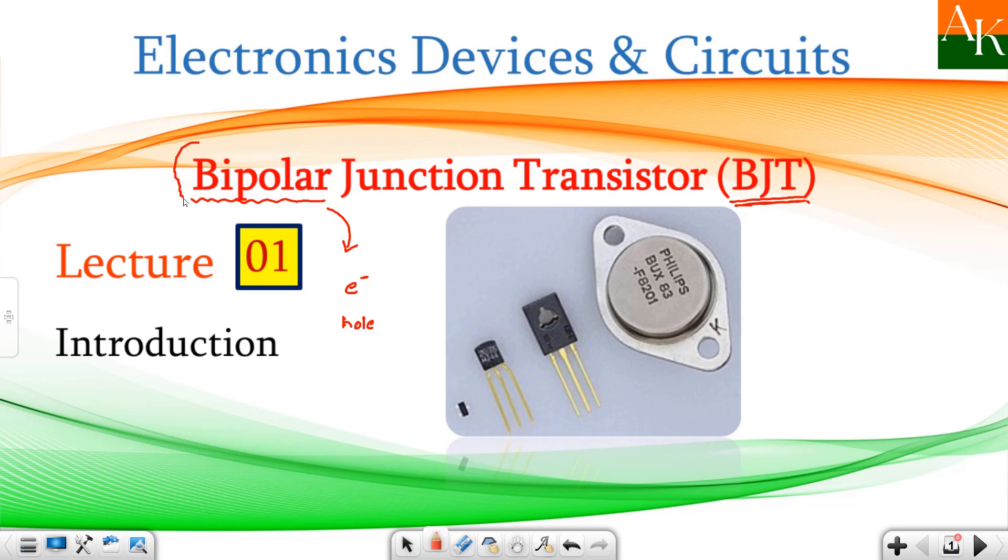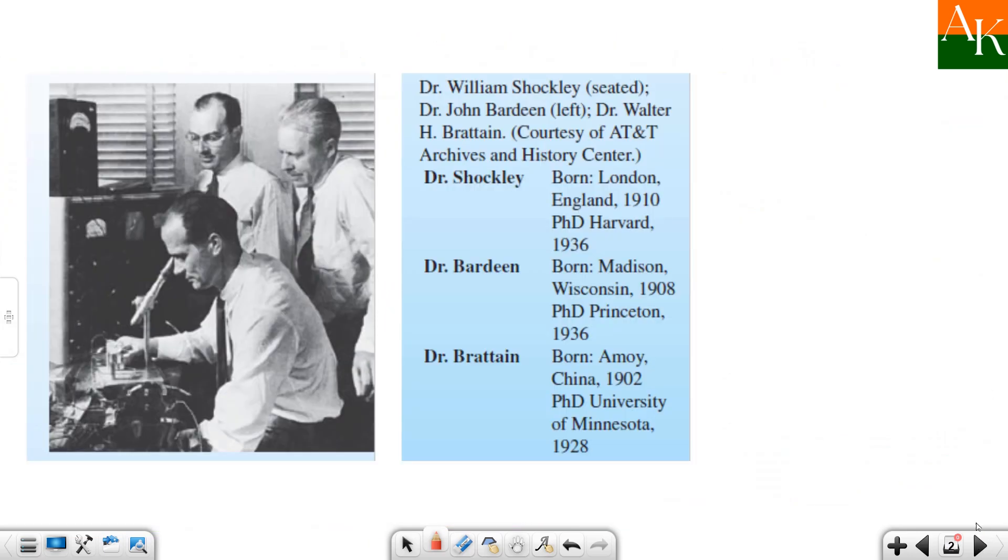There are some unipolar devices also like JFET where the current conduction is due to either of holes or electrons. But in bipolar junction transistor the current conduction is due to both electrons as well as holes. So, we will see the details of BJT.